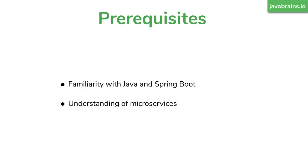Here are the prerequisites — there's not a lot. You should be familiar with Java and Spring Boot, since we're going to be primarily using Spring Boot and its features to build configurable microservices. I also recommend you have some understanding of microservices — what they are, how they work together, and some of the problems you'll face when building them. Understanding those problems will provide more insight into why we do some of the things we do with configuration in this course.